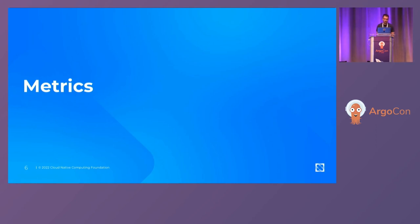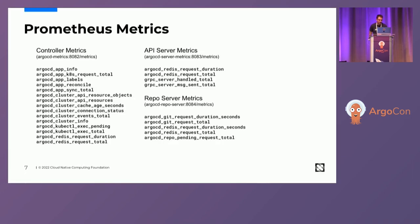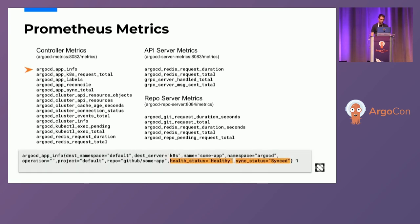Let's start talking about metrics and how we leverage Prometheus metrics at Intuit. If you check the documentation, you'll see that Argo CD has several built-in Prometheus metrics you can use to inspect how applications are behaving. For example, you can write queries to check for the health status of your applications. Whenever the health status changes from healthy to degraded, you can configure alerts to be sent to your team so you can act on those issues.